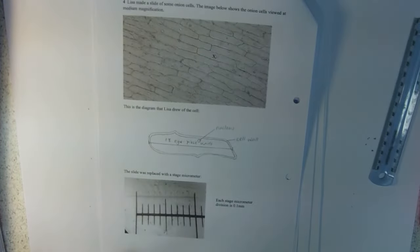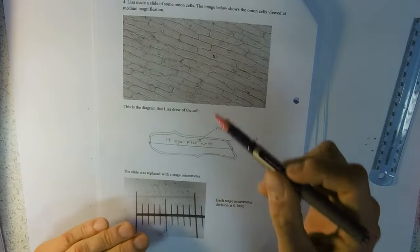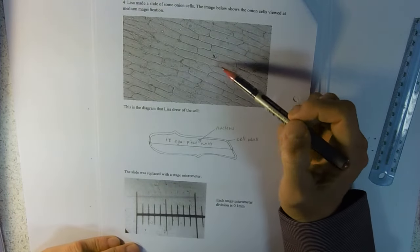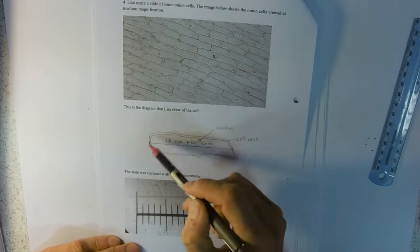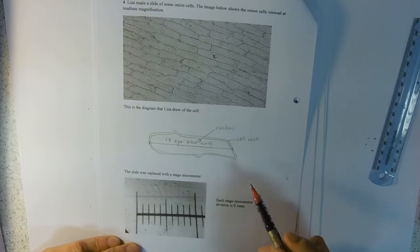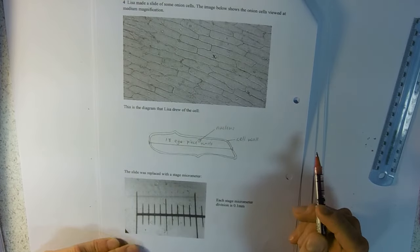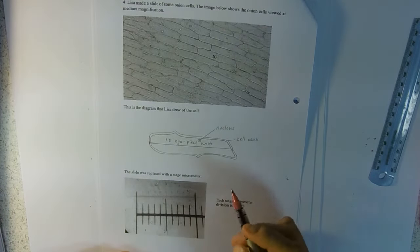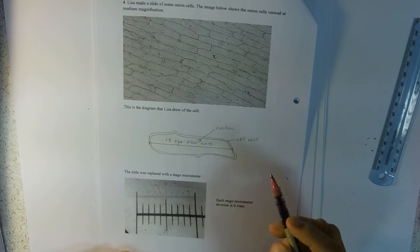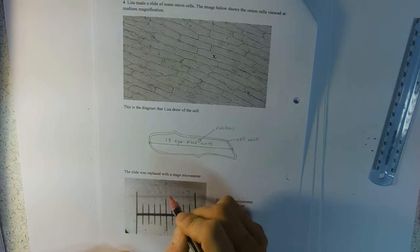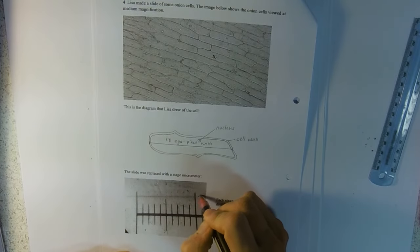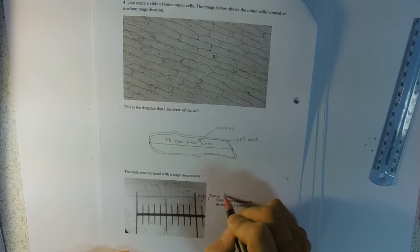We have got a diagram of cell X and then we've got a diagram of that and an eyepiece unit measurement. Here's a calibration and we have got this is the eyepiece scale.